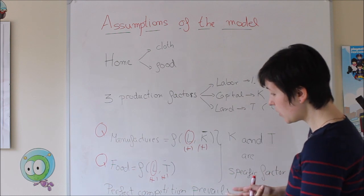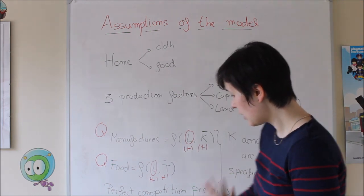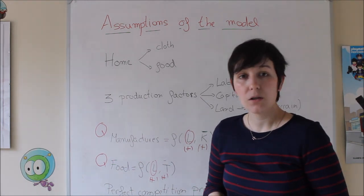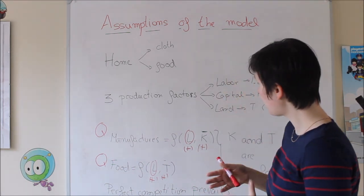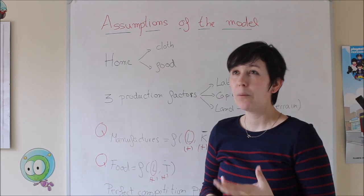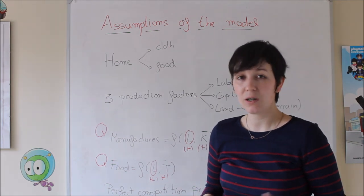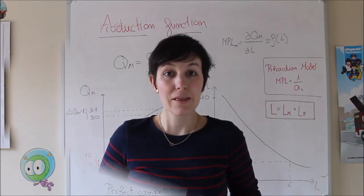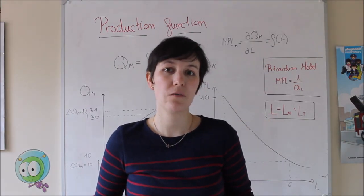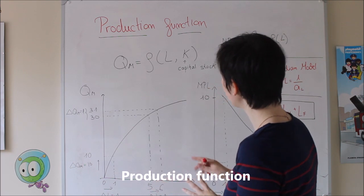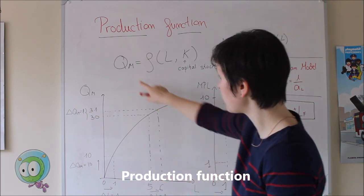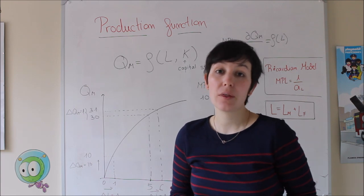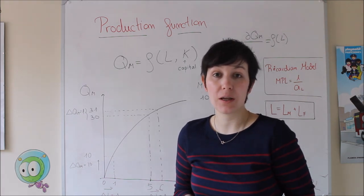We are always going to assume that perfect competition prevails in all markets. That means each production factor is going to be paid given their marginal productivity, so profits are zero. Now we are going to look at the production functions. We are going to use just the production function for the manufacturing sector, but the same analysis can be done with the food sector. The only difference is that instead of capital stock, in the food case you use land, which is T.